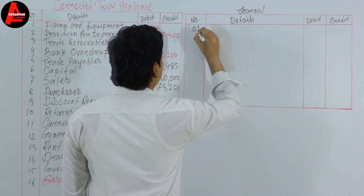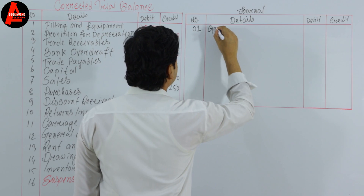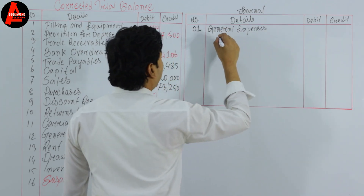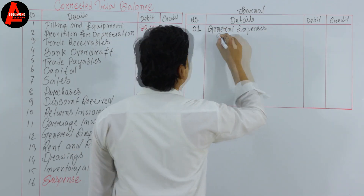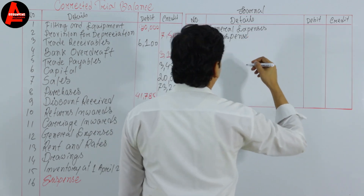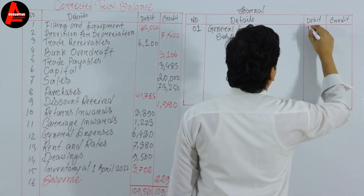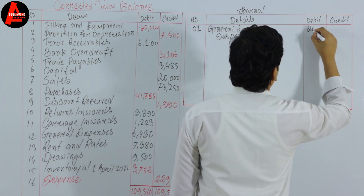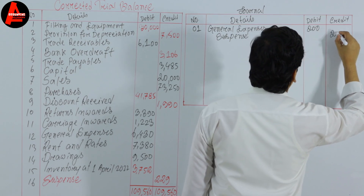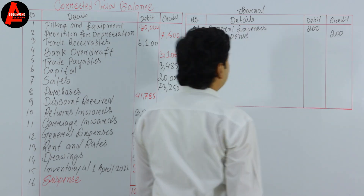Number one: general expenses to be debited and suspense account to be credited. On the debit column we write $200, and on the credit column we write $200.